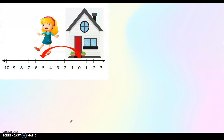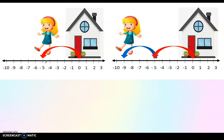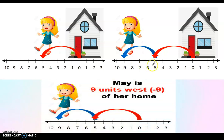If May will go to Louie's house, from zero going to the left, that's five units — one, two, three, four, five. Then from Louie's house, she will go to Danica's house, which is also four units to the left or west. Therefore, May is nine units west of her house, and that represents negative nine. Because when you say west, that is going to the left and represents negative. So you may write 'May is nine units west from her house,' or you can just write negative nine to represent negative integers.